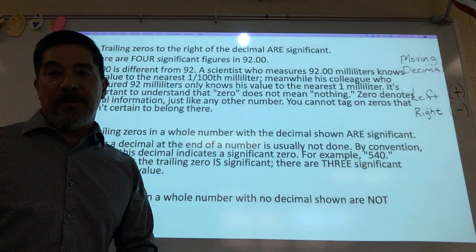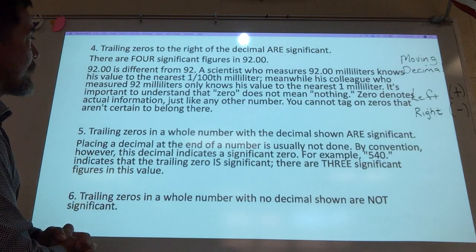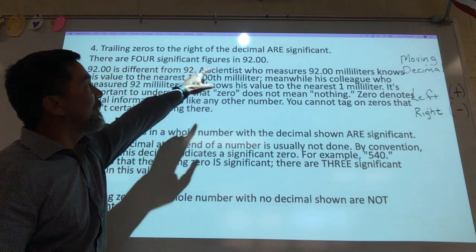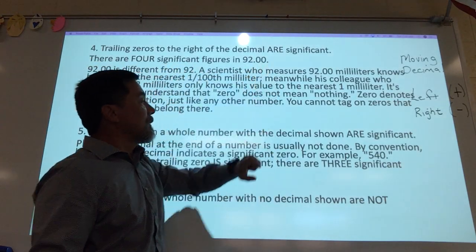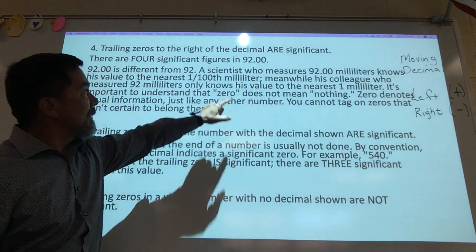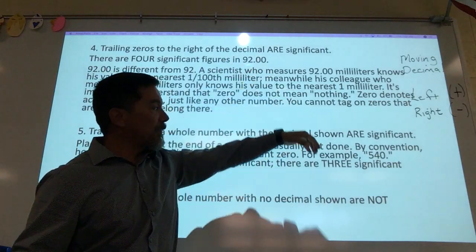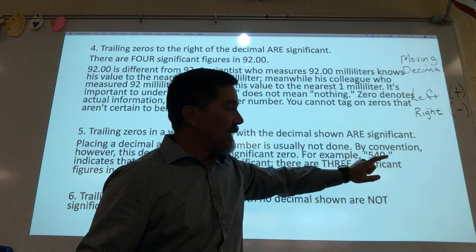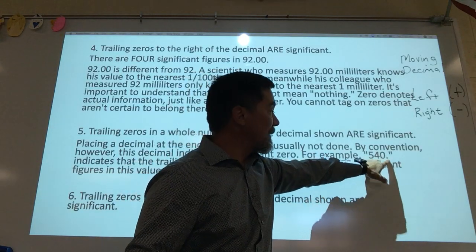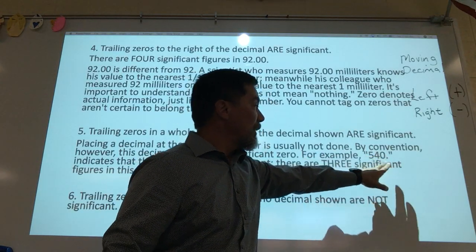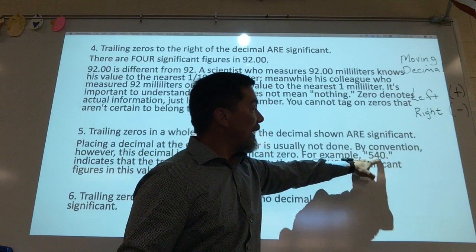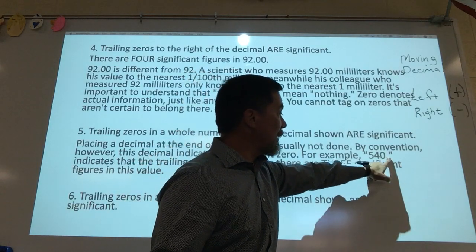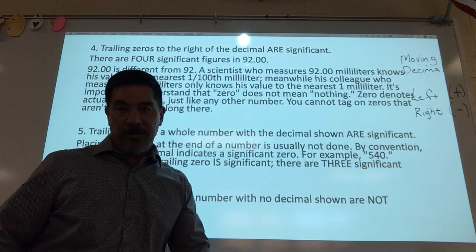Trailing zeros have a couple of rules. If they come after a decimal point, to the right of a decimal, they count. These are trailing zeros — zeros that come after a number. This trailing zero on 540 counts because it has a decimal. But if it didn't have a decimal, it wouldn't count. So right now 540. has three significant figures with the decimal. If you got rid of the decimal, it would only have two.